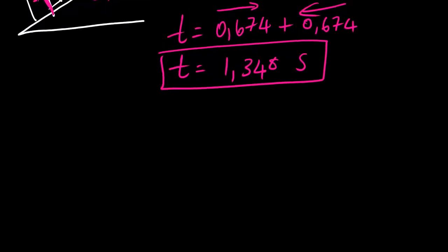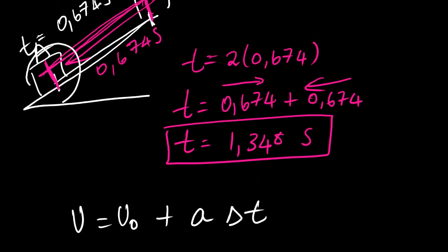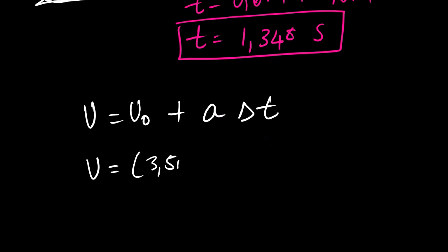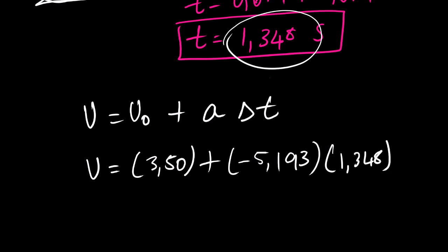So with this information, we can actually calculate. V is equals to VI plus A change in time. We're looking for the final velocity. The initial velocity at point A is 3.50 plus, remember acceleration, our deceleration, it's negative 5.193. And then time we take of the whole journey, which is 1.348. The answer is negative 3.50 meters per second. So this is the answer.